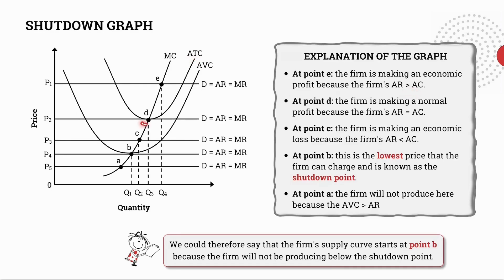At point D the firm is making a normal profit because the firm's average revenue is equal to its average costs. So that's my average costs there. That's my average revenue meaning that a normal profit has been earned.